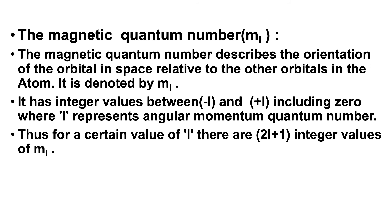Coming to the magnetic quantum number, represented by ml. It describes the orientation of the orbital in space relative to other orbitals in the atom. It has integer values between minus l and plus l, including 0. For a certain value of l, there are 2l+1 integer values of ml.